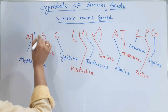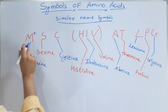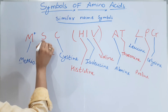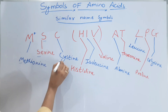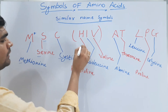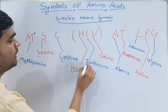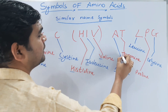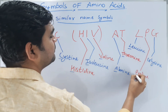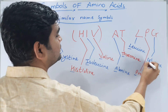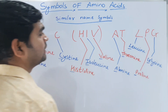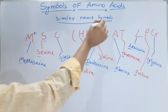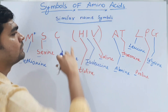So we have found that these similar symbols have similar names according to their symbol: C for cysteine, H for histidine, I for isoleucine, V for valine, A for alanine, T for threonine, L for leucine, P for proline, and G for glycine. These are the amino acid symbols with similar names and similar symbols.